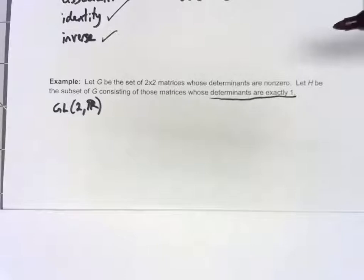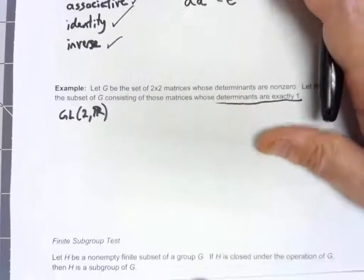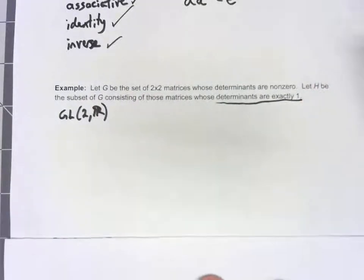Because this is a subset of G, by this two-step subgroup test, all I need to check is, is this thing closed under multiplication? And if an element is in there, is its inverse in there?